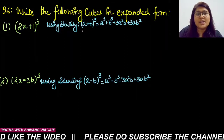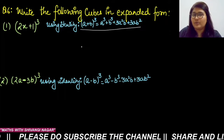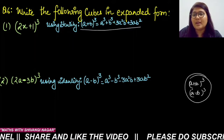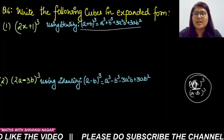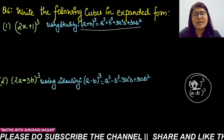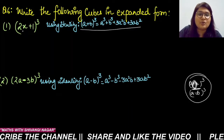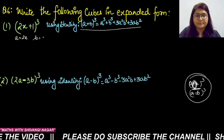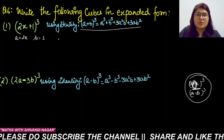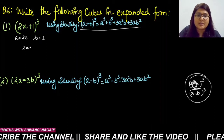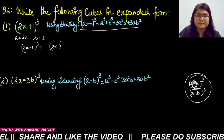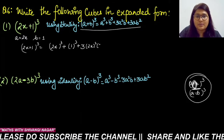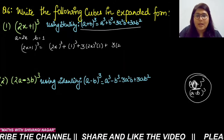The identity is: (a + b)³ = a³ + b³ + 3a²b + 3ab². For (2x + 1)³, comparing: a = 2x, b = 1. So the expansion is (2x)³ + 1³ + 3(2x)²(1) + 3(2x)(1)².